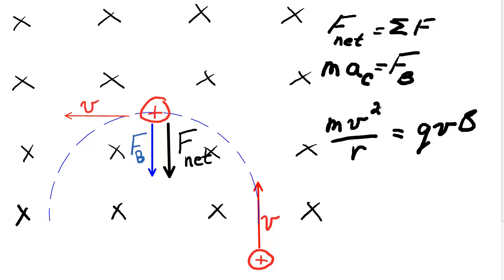As you can see, there's a velocity on either side, so one of the velocities cancels, and you end up with an equation that says MV over R is equal to QB.